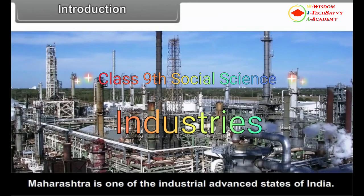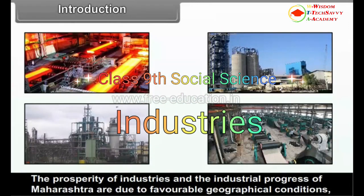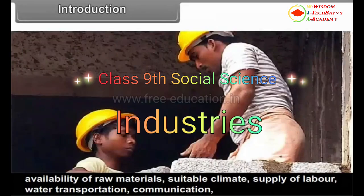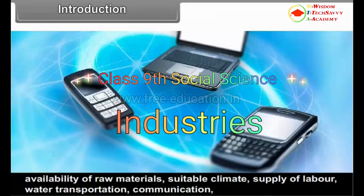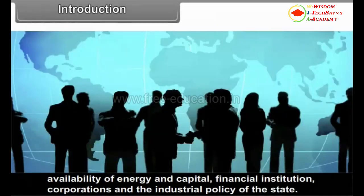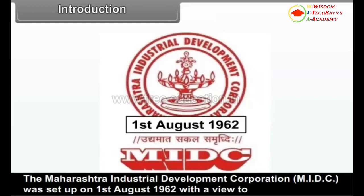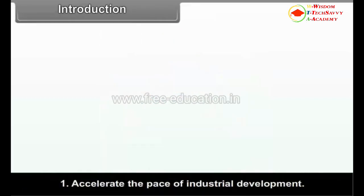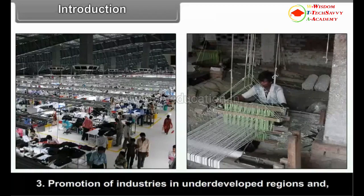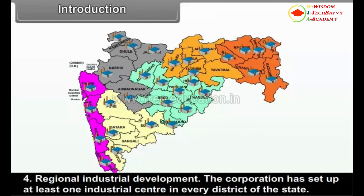Maharashtra is one of the industrially advanced states of India. The prosperity of industries and the industrial progress of Maharashtra are due to favorable geographical conditions, availability of raw materials, suitable climate, supply of labor, water, transportation, communication, availability of energy and capital, financial institutions, corporations, and the industrial policy of the state. The Maharashtra Industrial Development Corporation (MIDC) was set up on 1st August 1962 to accelerate the pace of industrial development and provide infrastructural facilities.